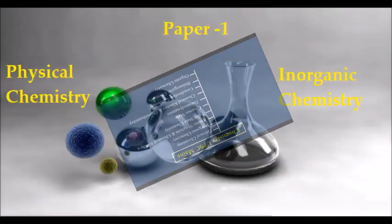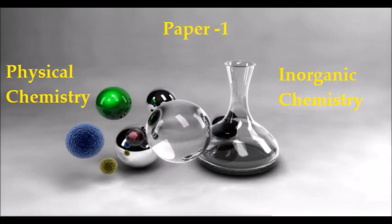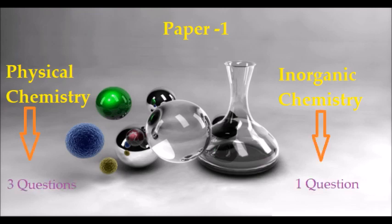Paper 1 of chemistry has two major branches, physical chemistry and inorganic chemistry. These two branches are simple as well as scoring. The syllabus does not clearly define section A and section B in paper 1. However, in the main examination question paper section A invariably contains three questions including compulsory from physical chemistry. There is usually one question from inorganic chemistry.